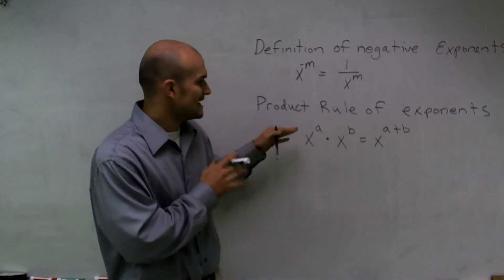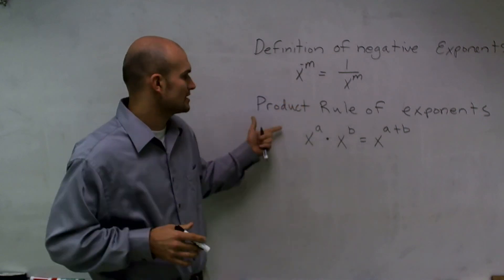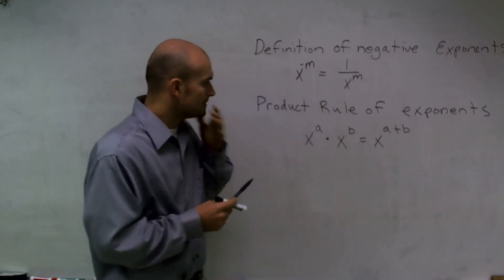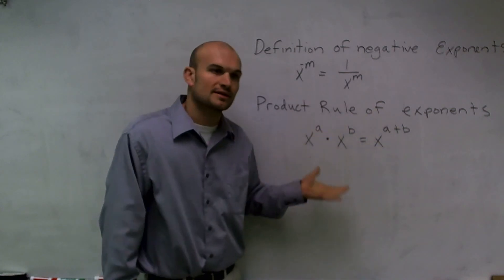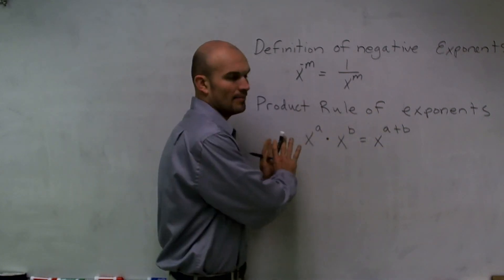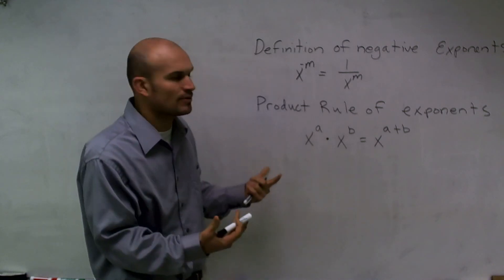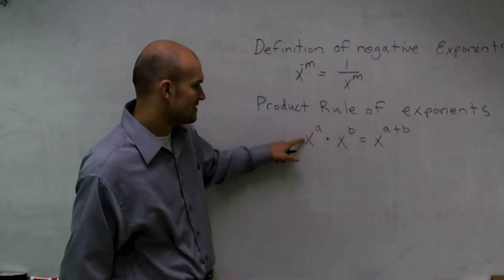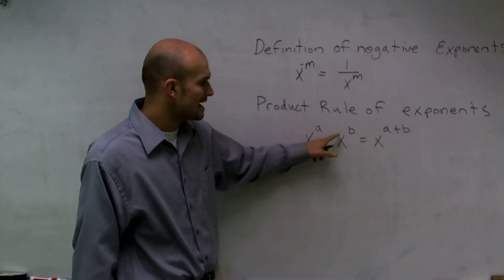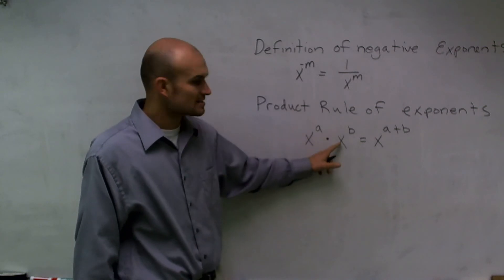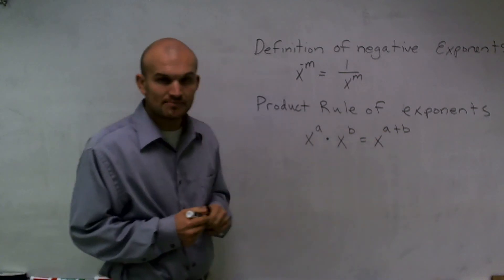To understand negative exponents, we first need to look at the product rule of exponents. If you're not familiar with it, I have a video for that. The product of exponents states that if you have a real number x raised to a, times x raised to b, that equals x to the a plus b.